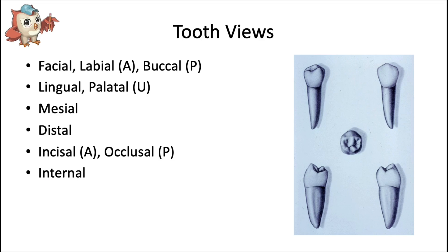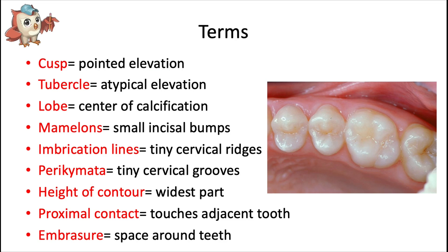As part of this series I'll go through each kind of tooth and look at key landmarks and high-yield features from its different views or aspects. We'll look at the facial (or labial) aspect for anterior teeth, or buccal aspect for posterior teeth. We'll also look at the lingual aspect — called palatal for maxillary teeth since that surface is adjacent to the hard palate. We'll look at mesial and distal aspects, the incisal surface for anterior teeth or occlusal surface for posterior teeth, and cross-sectional internal views of the crown or root.